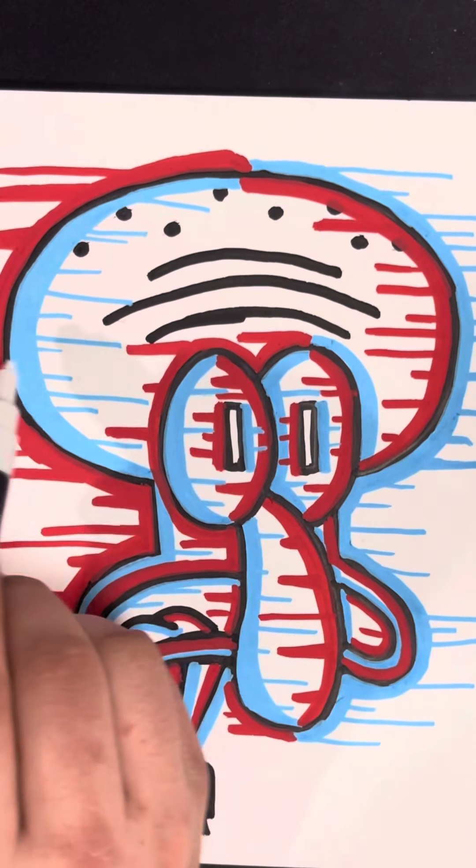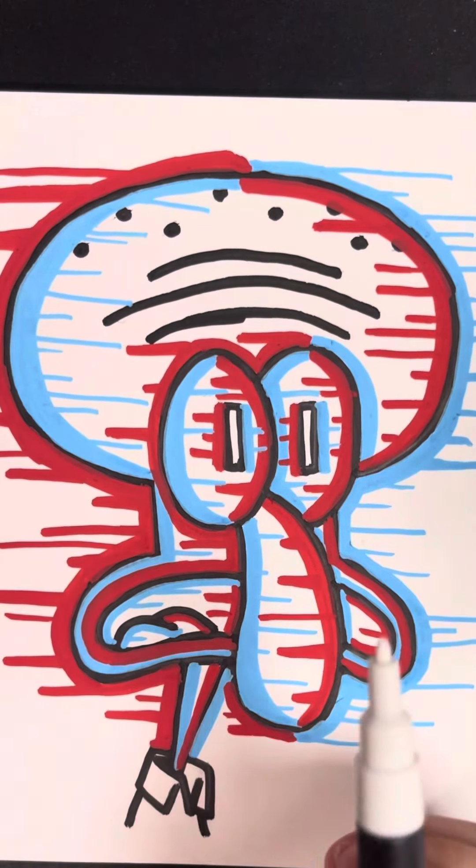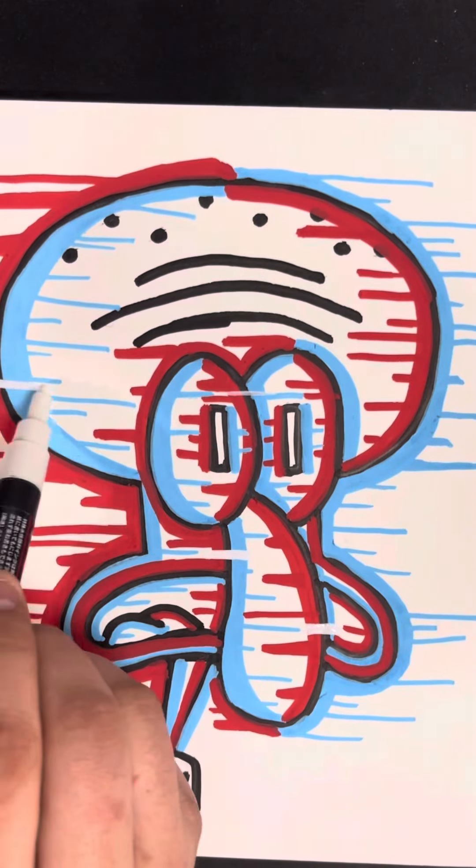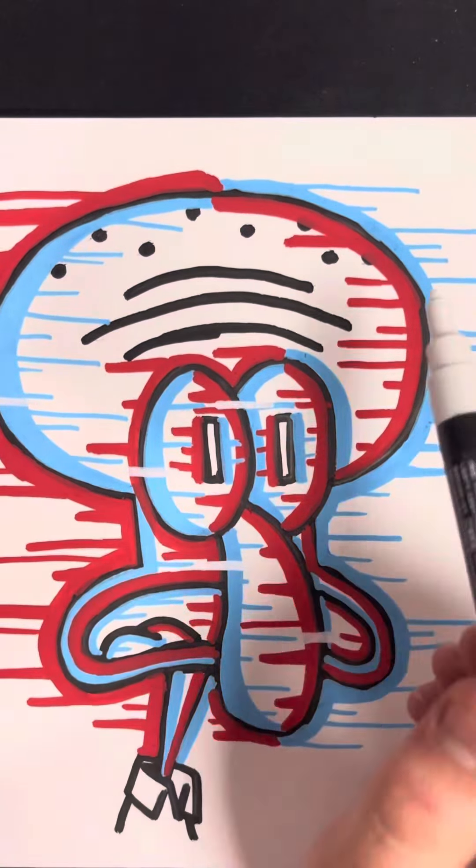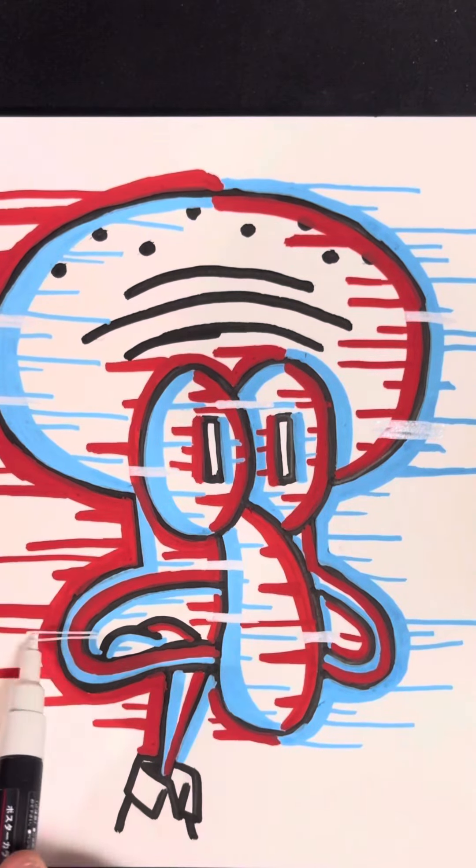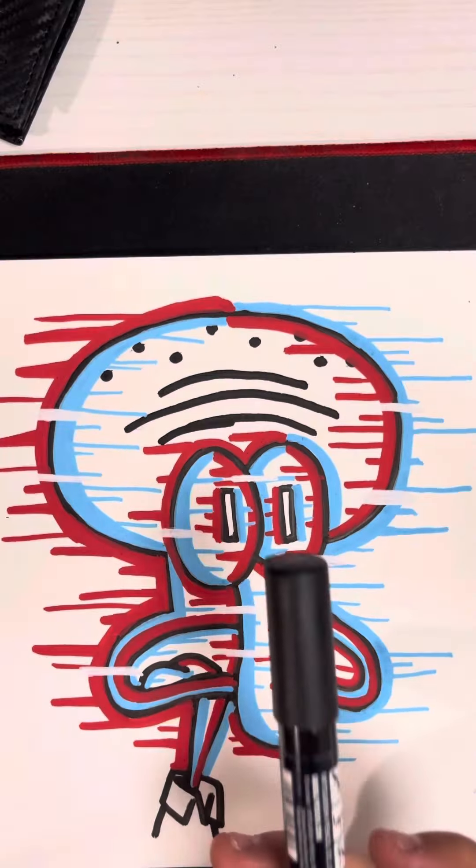Once you're done adding the glitch lines what you want to do is grab a white Posca marker and then just kind of go over all the lines in different areas, kind of connect the two, make it look like you didn't draw there at all. And once you're done doing all of that it should kind of make it look more glitched.